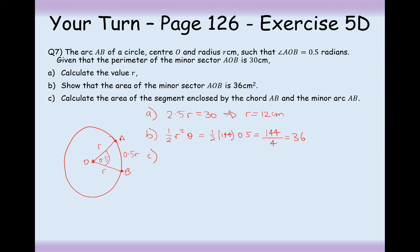Calculate the area of the segment enclosed by chord AB and the minor arc. We know the sector area is 36, so we just need the area of the triangle: half times 12 squared times sine 0.5 radians. That gives 0.5 times 144 times sine 0.5, which equals 34.519. Then 36 minus 34.519 gives us 1.48 centimetres squared to 3 significant figures.